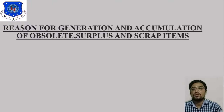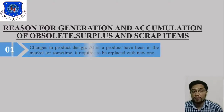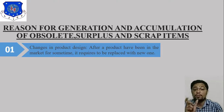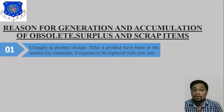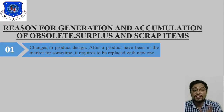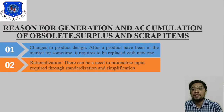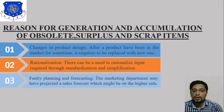The next topic is the reasons for generation and accumulation of obsolete, surplus, and scrap items. The first and important reason is changes in product design — after a product has been in the market for some time, it requires replacement with a new one. The second reason is rationalization, where there is a need to rationalize inputs through standardization and simplification.